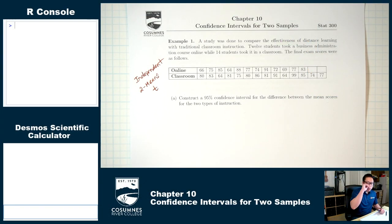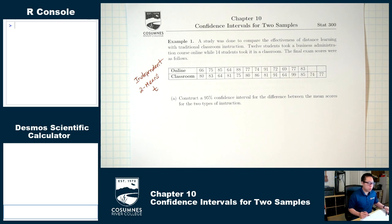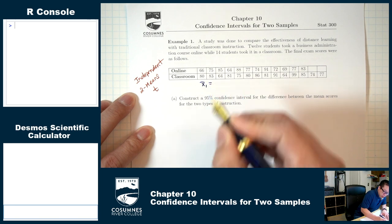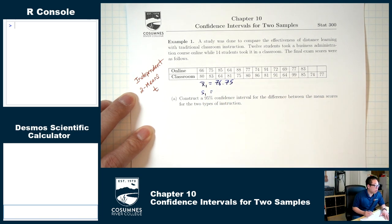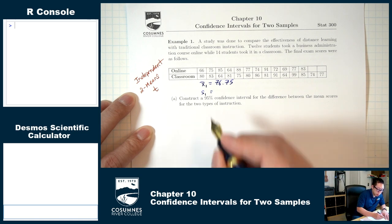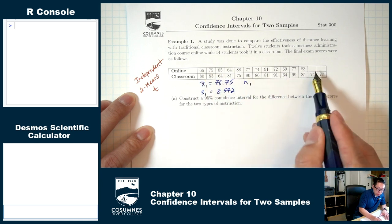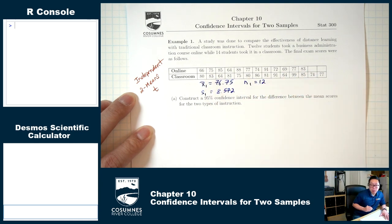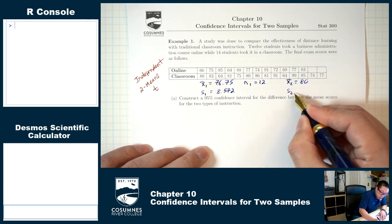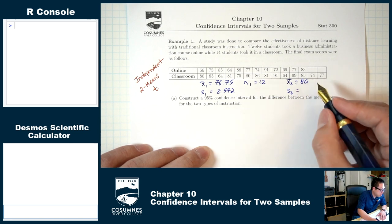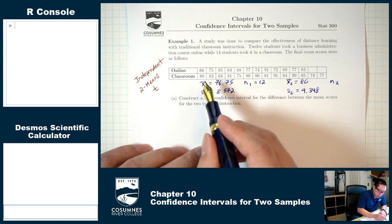Let my ones represent online and my twos represent classroom. x-1-bar, the mean for online, was 76.75. s-1, the standard deviation for online, rounded to three decimal places is 8.572. n-1, the sample size for online, is 12. x-2-bar, the mean for classroom, was 80. s-2, the standard deviation for classroom, rounded to three decimal places is 9.348. n-2, the classroom sample size, is 14. Now we're ready to construct our confidence interval.